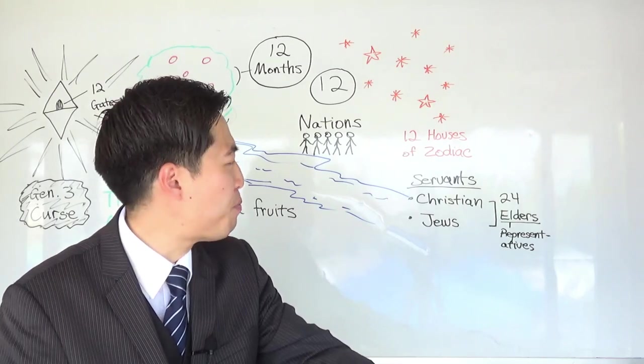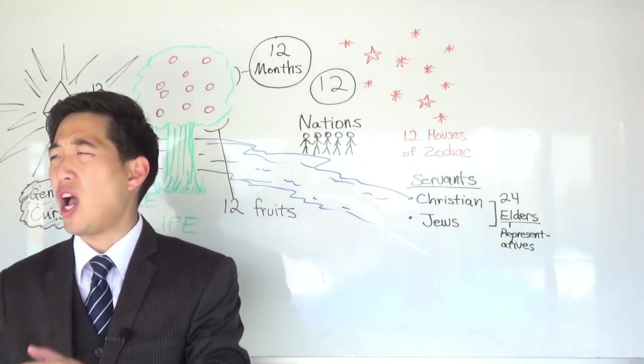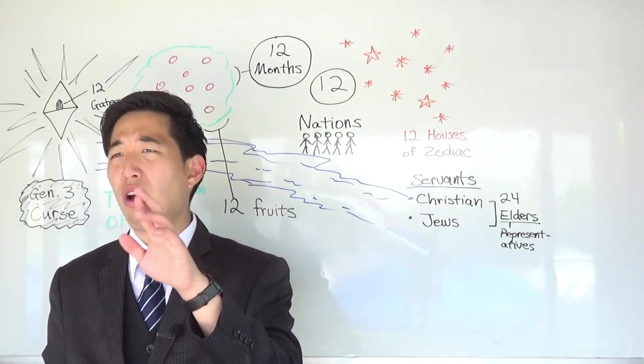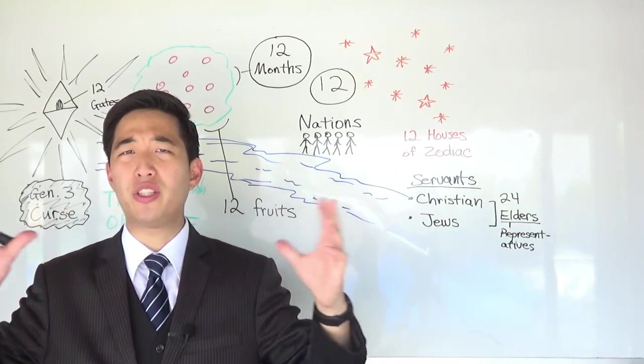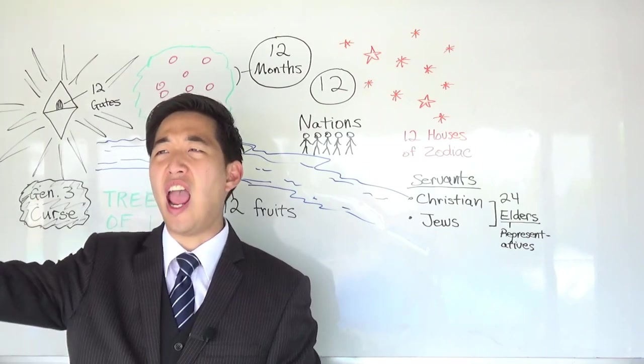So these are representatives of tribes of Israel and the Christian groups. And then I pointed out so then the apostles, they can represent what? The Christians. The tribes of Israel can represent the Jews. And that's why Revelation 4 and 5, all the Old Testament Jews, and then the Christian church, they can proclaim about the Lamb.